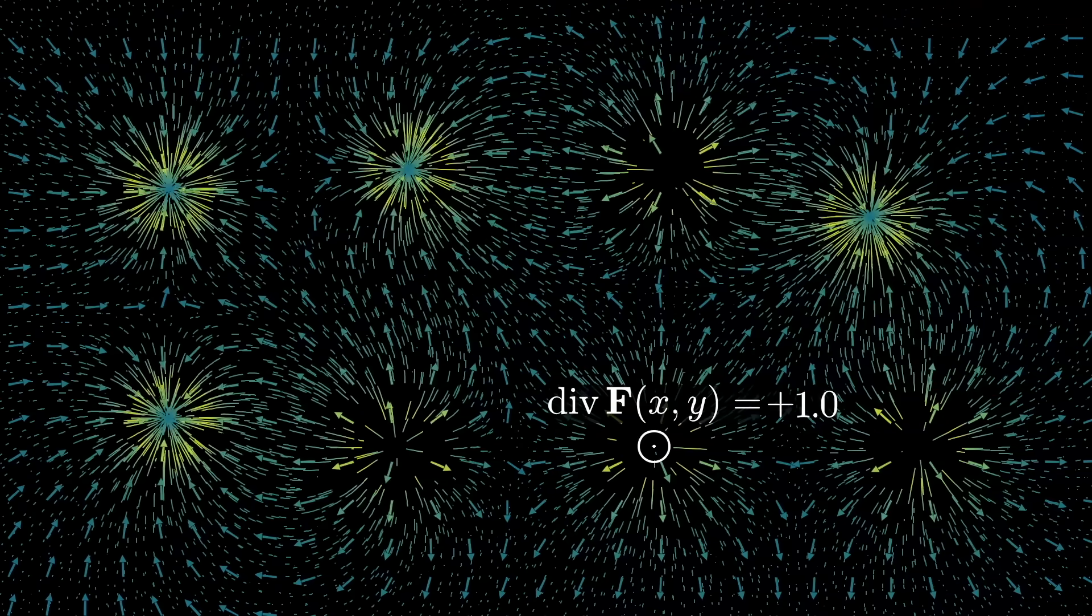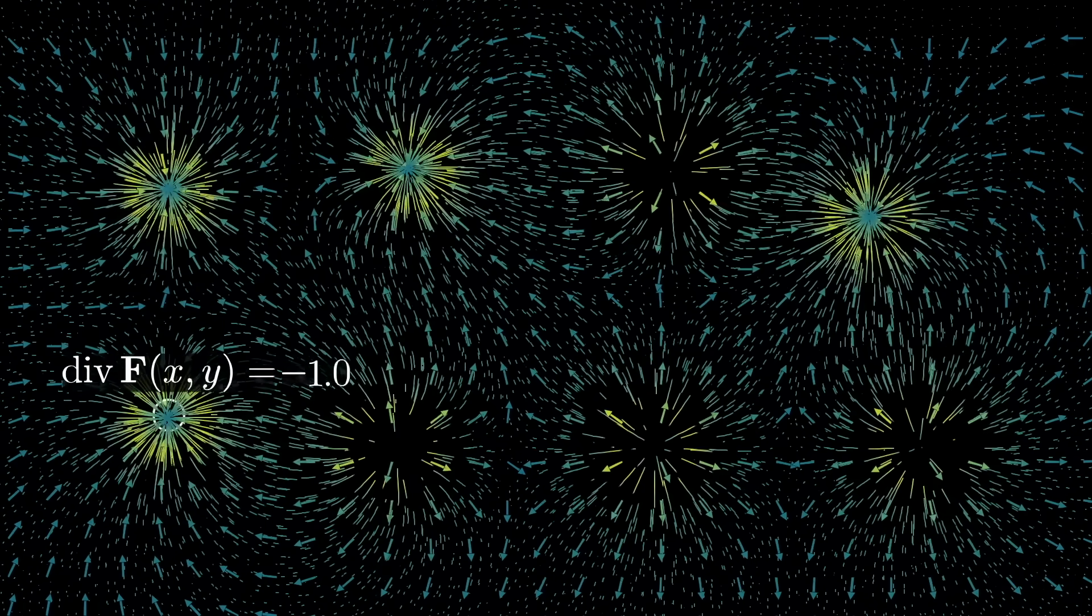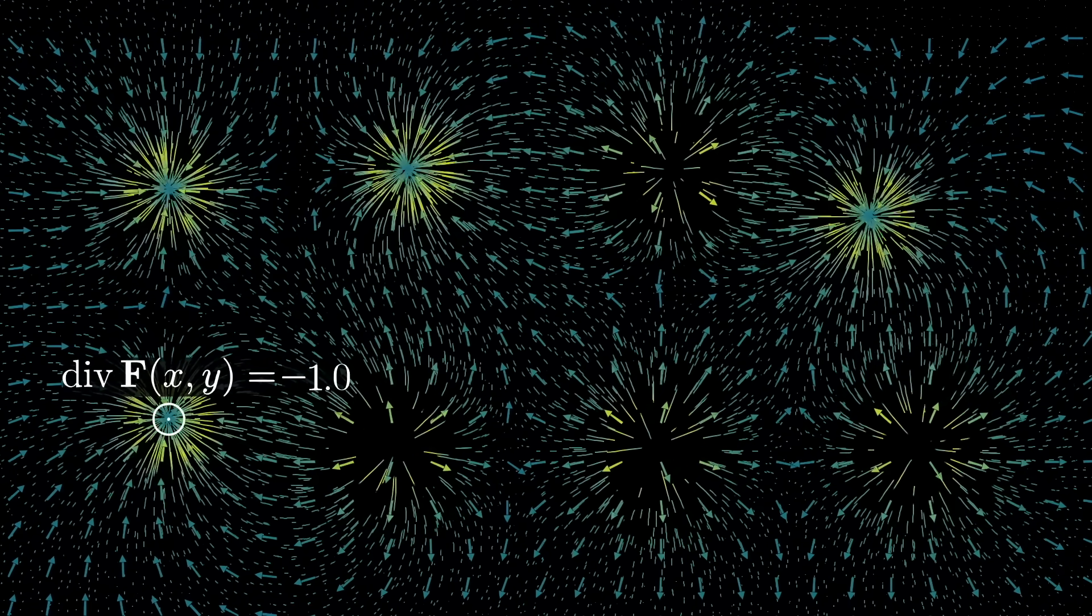On the flip side, if in a small region around a point there seems to be more fluid flowing into it than out of it, the divergence at that point would be a negative number.